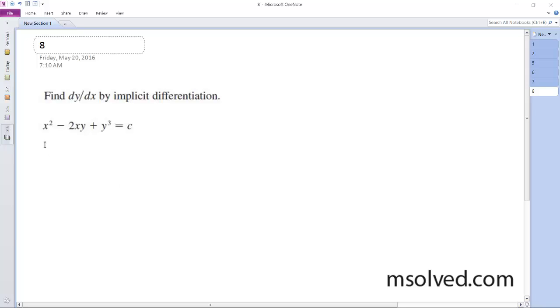So the derivative of this: d/dx of x squared minus 2xy plus y cubed is equal to d/dx of c, which is just a constant, so it's going to become zero.